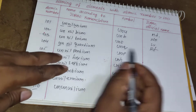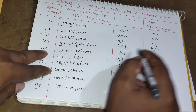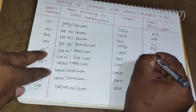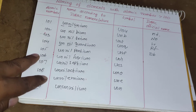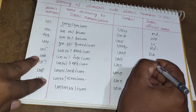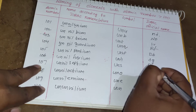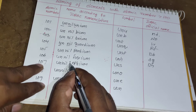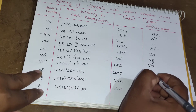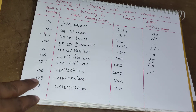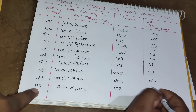In modern IUPAC official nomenclature: element 104 is Rutherfordium, element 105 is Dubnium, element 106 is Seaborgium (Sg), element 107 is Bohrium, element 108 is Hassium, element 109 is Meitnerium, and element 110 is Darmstadtium.